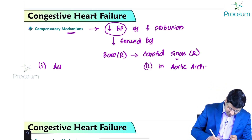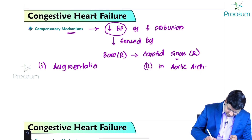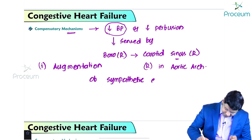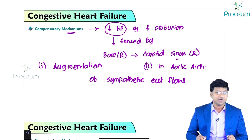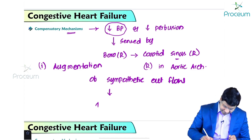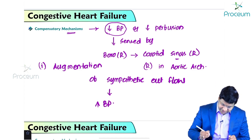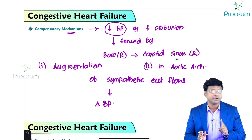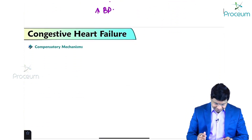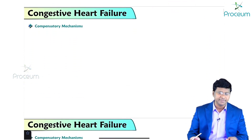Once the baroreceptors are activated, the information is passed to the medulla oblongata indicating that blood pressure is low. The vasomotor center within the medulla oblongata gets activated, causing augmentation of sympathetic outflow, which leads to release of epinephrine and norepinephrine.